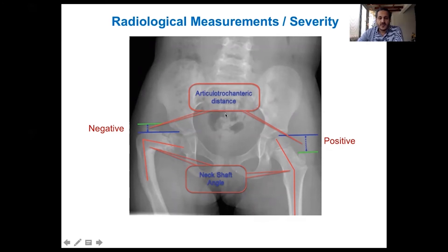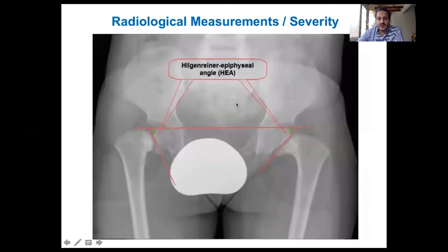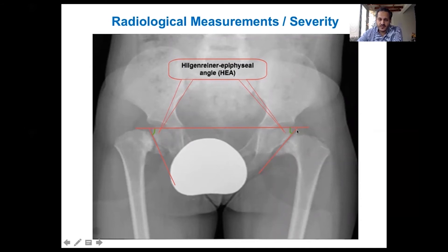To measure the severity of coxa vara, we use the neck shaft angle, the articulotrochanteric distance — the distance from the articular joint line to the tip of the greater trochanter, which normally should be positive but may decrease or become negative — the head shaft angle, and most importantly the Hilgenreiner epiphyseal angle. This is the angle between the Hilgenreiner line passing through the triradiate cartilage on both sides and the obliquity of the physeal line along the proximal physis.